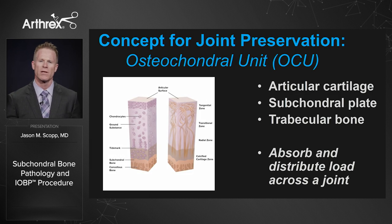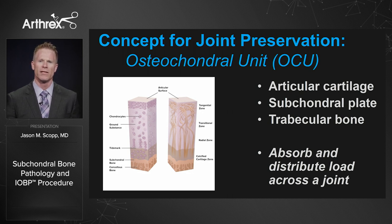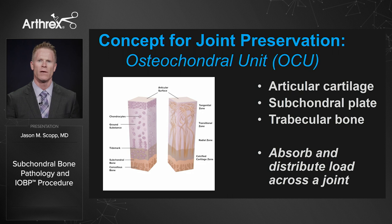That brings me to the first concept we need to learn today: the osteochondral unit. This is the interplay between the articular cartilage, the subchondral plate, and the trabecular bone. That unit's job is to absorb and distribute load across a joint. When there is a failure of that osteochondral unit, we will begin to see failure of the joint as an organ and progressive breakdown of the homeostasis of the joint.